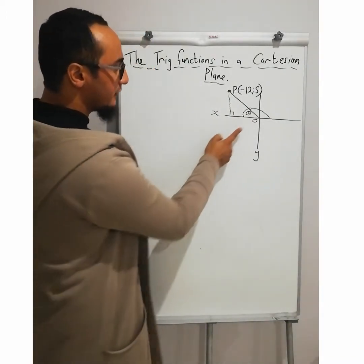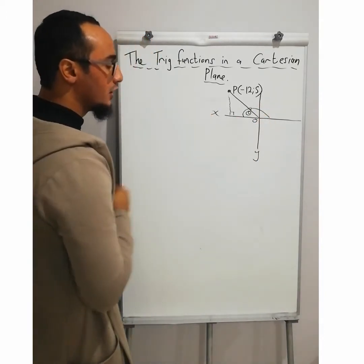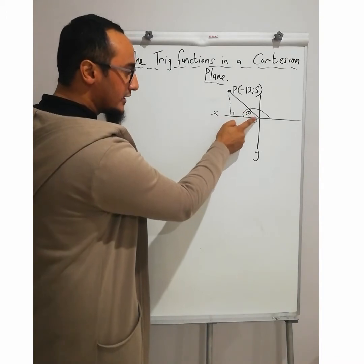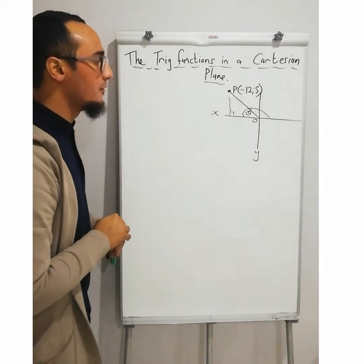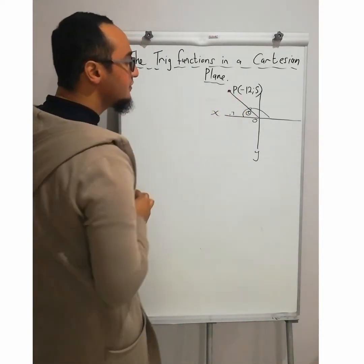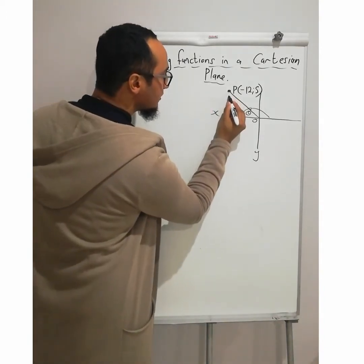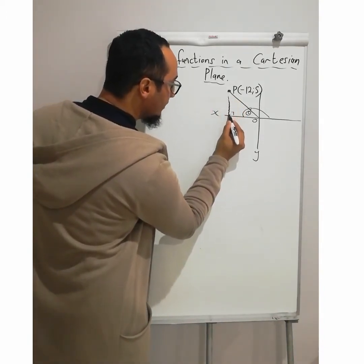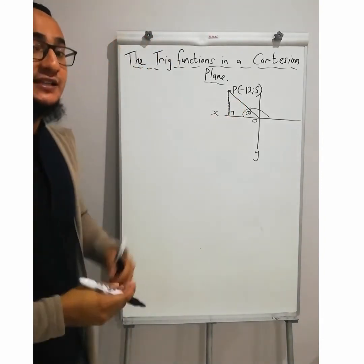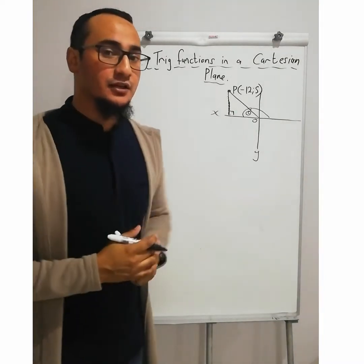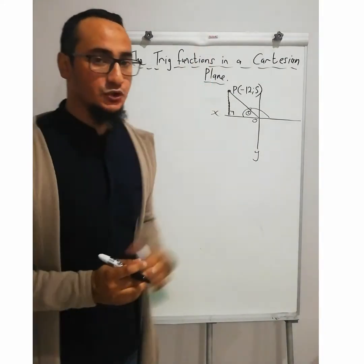So firstly, I have a Cartesian plane with an x-axis and a y-axis. Over here is my angle, and I have an arm — that arm is known as my terminal arm. The first thing I do is from my point, always bring a dotted line from my point towards my x-axis, making it a right-angle triangle. When dealing with right-angle triangles, trigonometry plays the usual role.